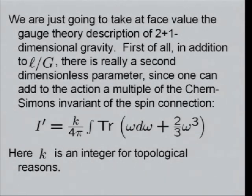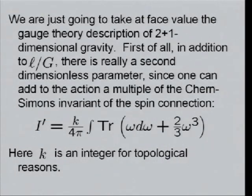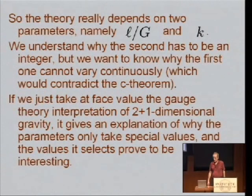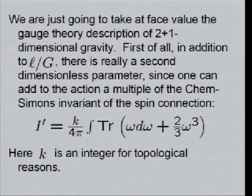In addition to L over G, there's a second dimensionless parameter, since you can add to the action a multiple of the Chern-Simons invariant of the spin connection, where here, K is an integer for topological reasons. So our problem of pure gravity depends on two parameters, L over G and K, and we're trying to solve a classically trivial theory that depends on two parameters. And we understand that the second parameter is an integer. That has to do with classical considerations. The Chern-Simons action is multivalued, and in quantum mechanics the action has to be defined modulo 2π. And when you implement that, the 4π here was chosen, so that if K is an integer, then the action is defined mod 2π.